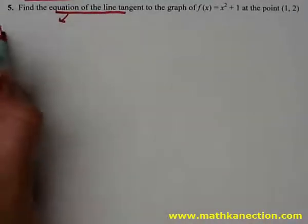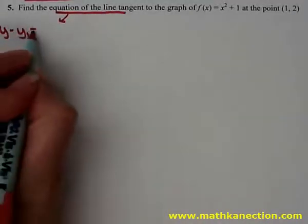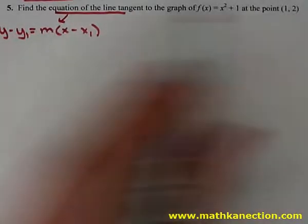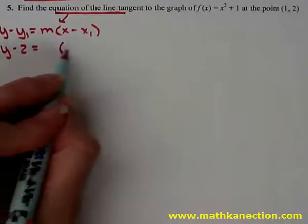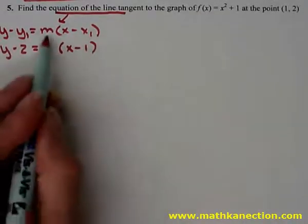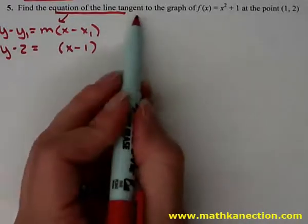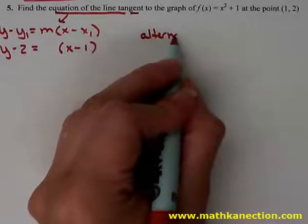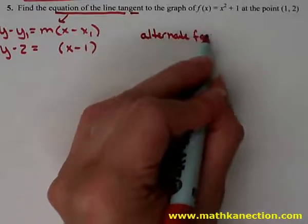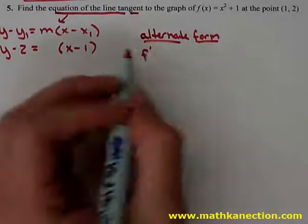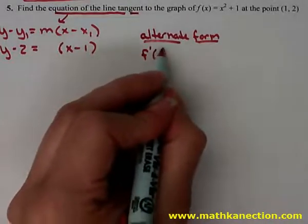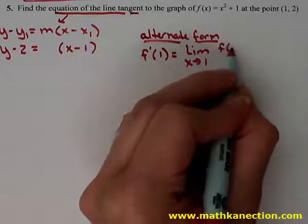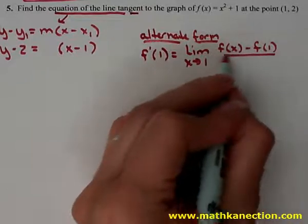Now we're going to find the equation of a tangent line. Remember, the equation of a tangent line is y minus y1 equals m times the quantity x minus x1. We have the point with y value 2 and x value 1. We just need to calculate the slope using the derivative. We'll choose the alternate form and calculate f prime of 1, which is the limit as x approaches 1 of f of x minus f of 1, all over x minus 1.